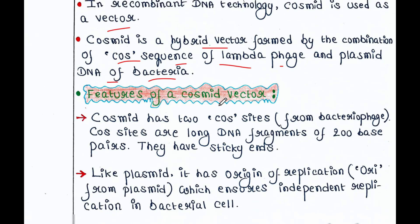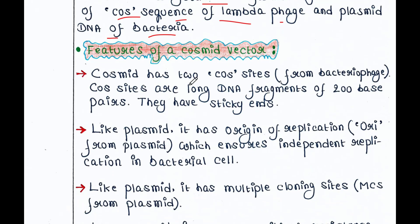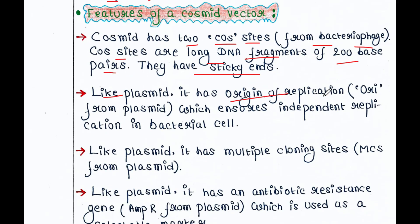Let's see the features of a Cosmid vector. A Cosmid vector has two cos sites, taken from a virus — that is bacteriophage. Cos sites are long DNA fragments of 200 base pairs and they have sticky ends, which means these cos sites can join together. Like Plasmid, it has an origin of replication or ORI, taken from Plasmid, which ensures independent replication in the bacterial cell.